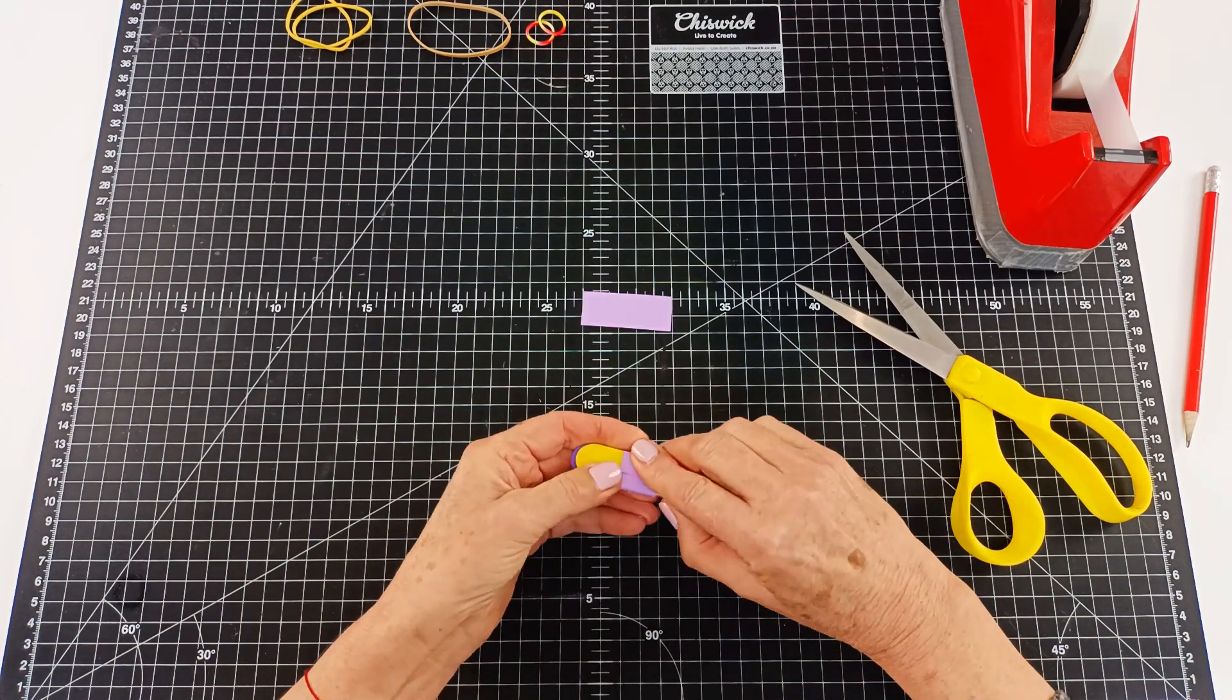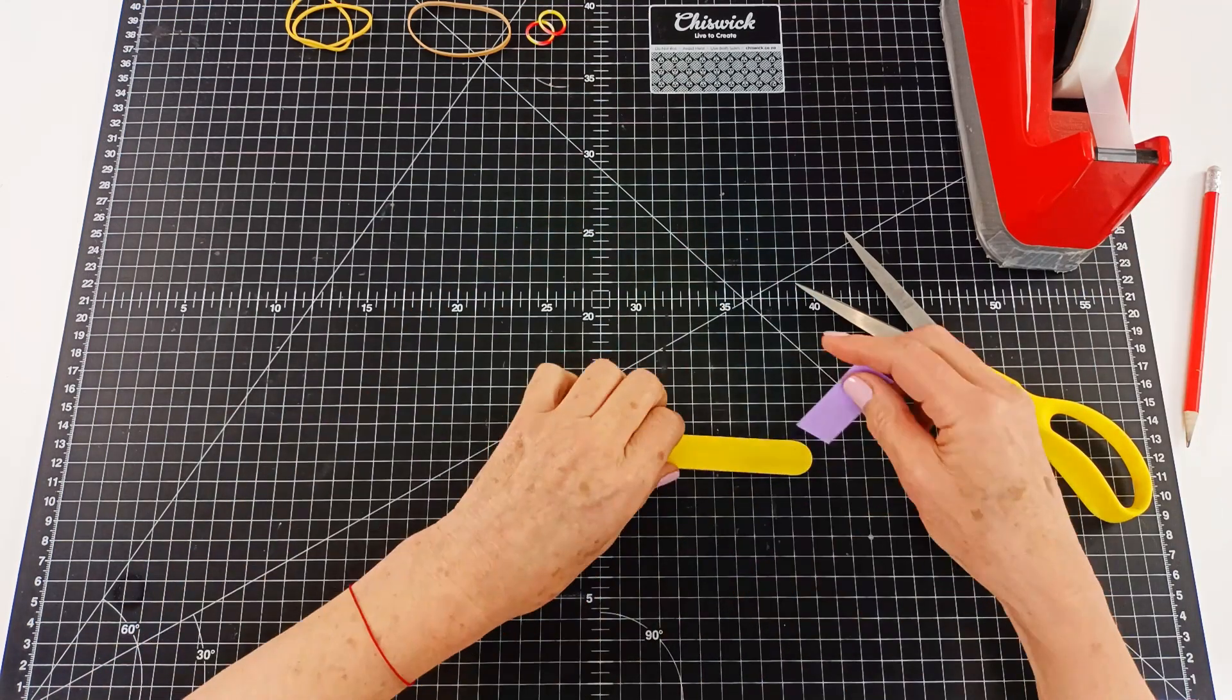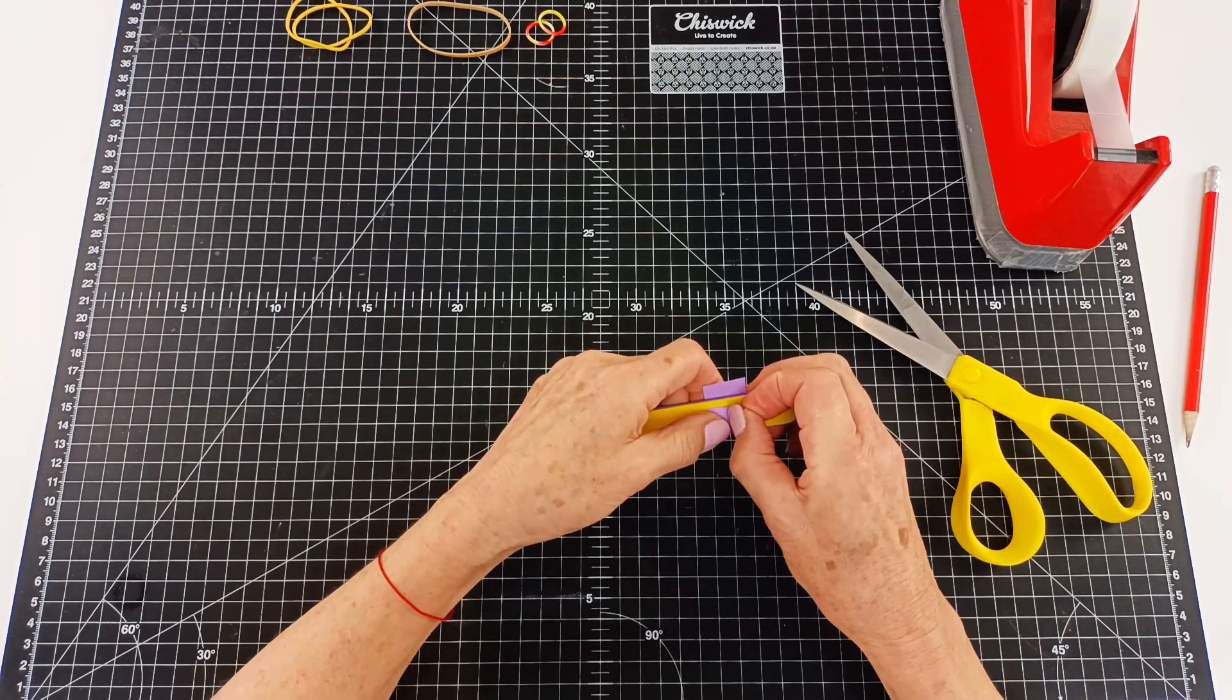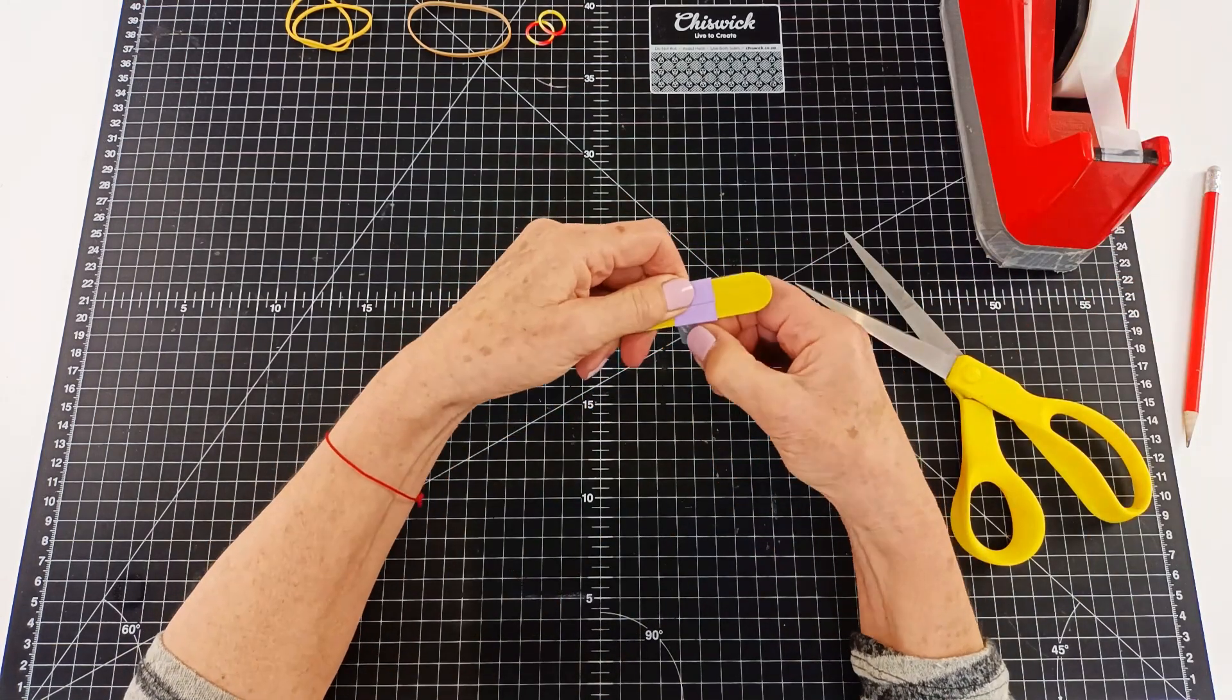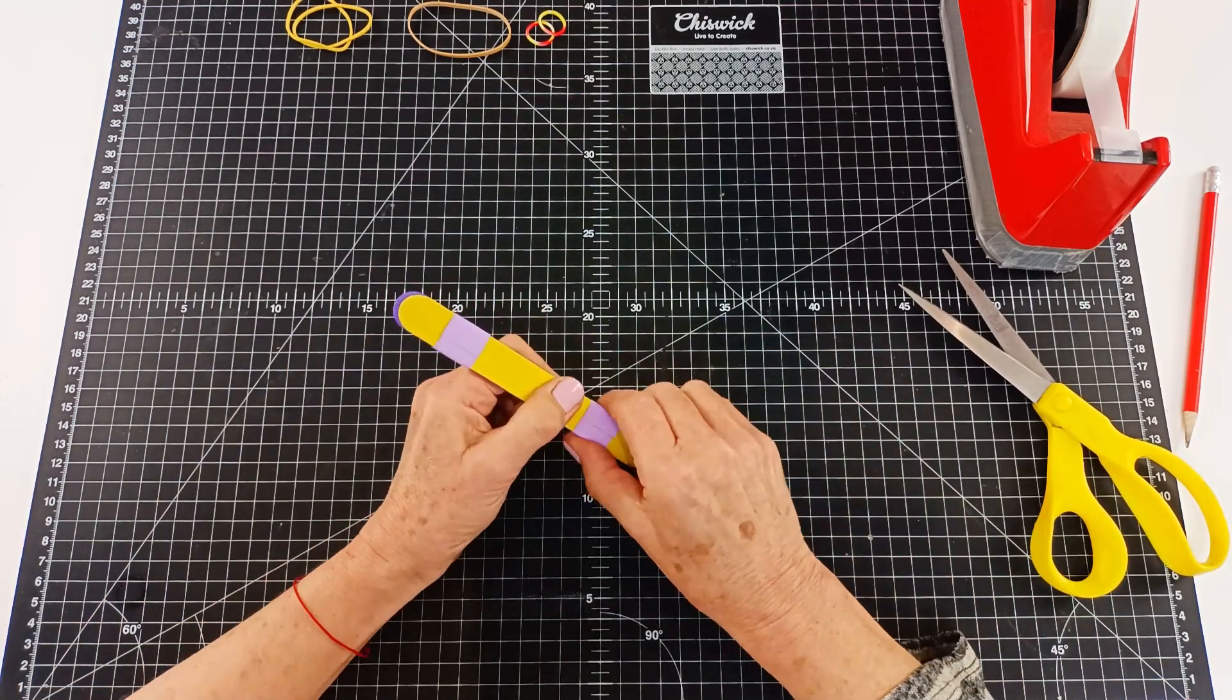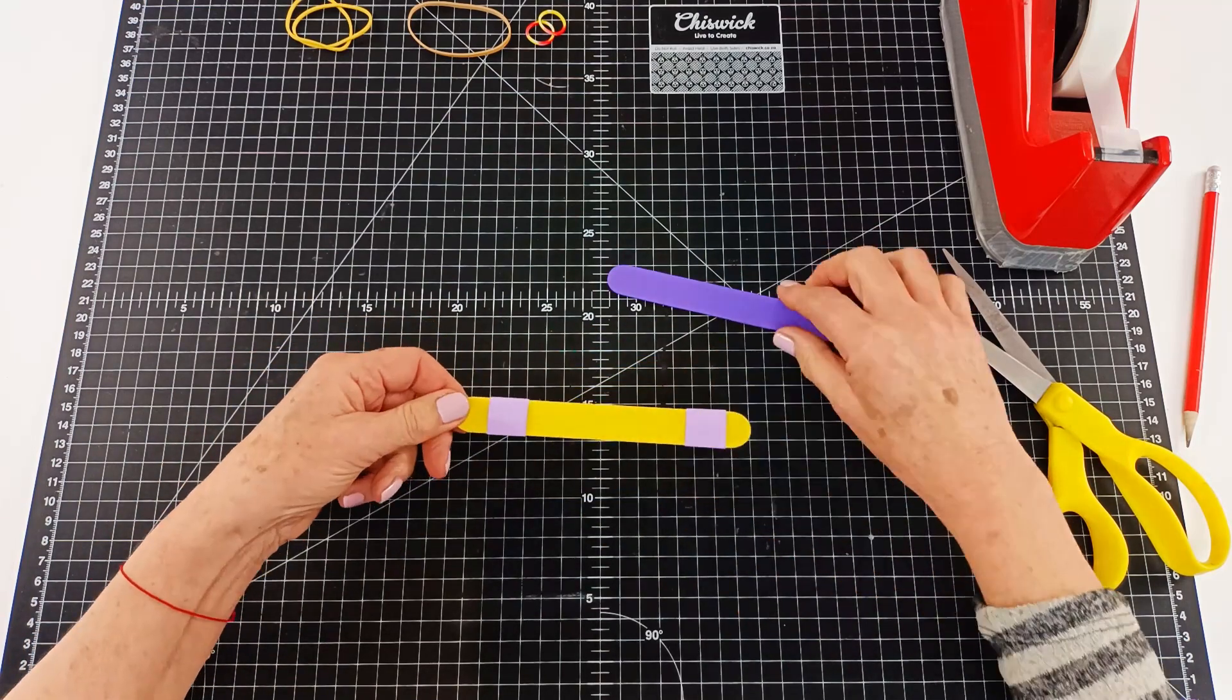We're going to wrap them around two jumbo craft sticks and then tape them into place. You want this snug but not too tight and you'll see why in just a moment. There we go. We're just going to tape that into place. Make sure the tape does not touch the craft sticks because now we're going to very gently wiggle one of those craft sticks out. So there we go.